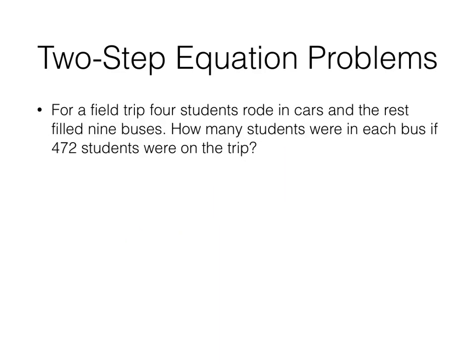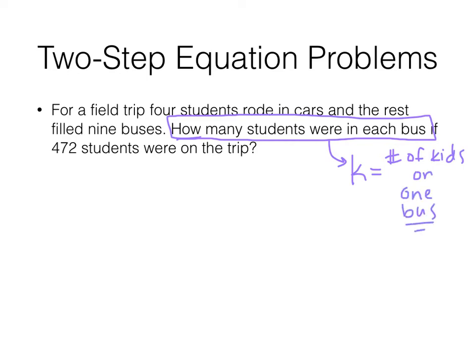Again, try pausing it and then do it yourself. And then you can see how you did. For a field trip, four students rode in cars and the rest filled nine buses. How many students were in each bus if 472 students were on the trip? So sometimes the question in the problem tells you what your unknown is. So that's what we're going to have this time. So I'm not going to use S for students because I don't like to use S. I'm going to use K. So number of kids on one bus.